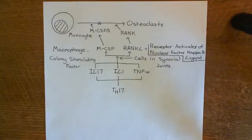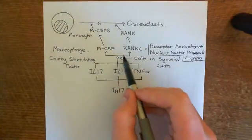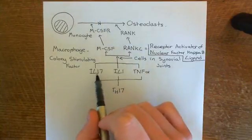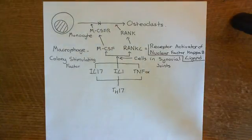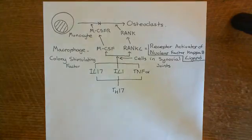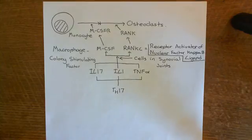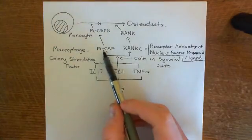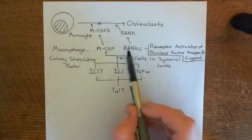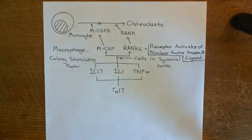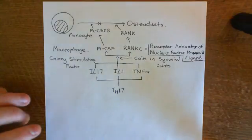These two molecules — MCSF and RANKL — are triggered to be produced by cells in the synovial joint by the cytokines released by T-Helper 17 cells. So monocytes come into the interstitial fluid of the synovial membrane due to the synovitis and endothelial cell activation, then come into contact with high levels of MCSF and RANKL, which drive their differentiation into osteoclasts. The osteoclasts then start degrading bone.